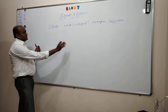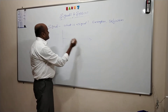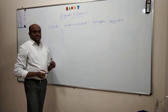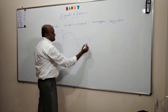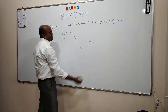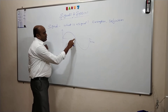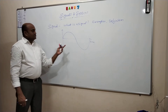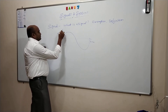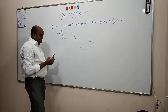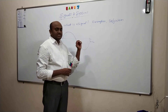Coming to the definition: a signal is any physical quantity that is varying with respect to one or more than one independent variable — in this case varying with respect to time. On the x-axis I will take time, on the y-axis I will take amplitude. A signal is any physical quantity that varies with time, space, or any other independent variable, which carries some information. It is also defined as a function of one or more independent variables that conveys some information.